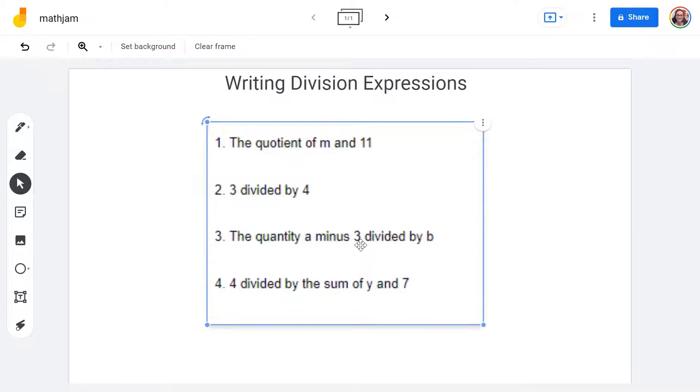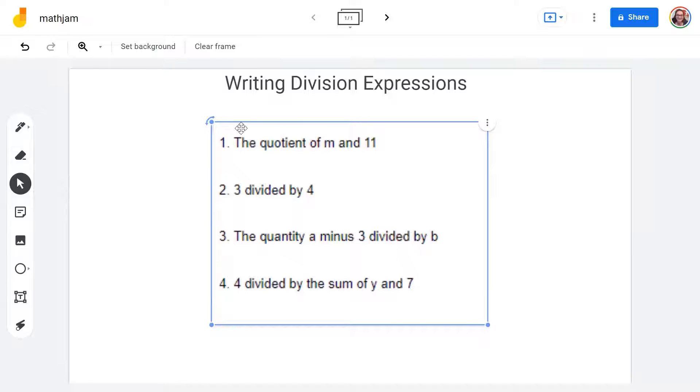So problem number one says the quotient of M and 11. Now quotient, that's just another way of saying divide. So the quotient of M and 11, this is a really easy one for us to do. So the quotient of M and 11 means that we are going to be dividing M and 11. So we're going to have M over 11.